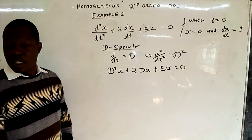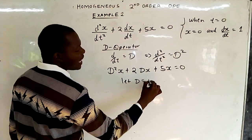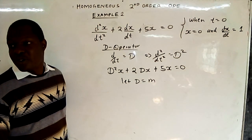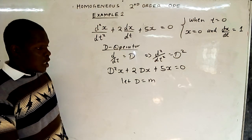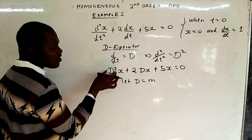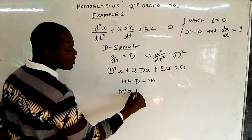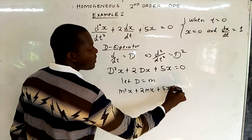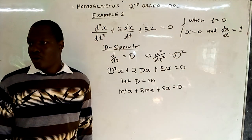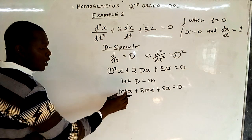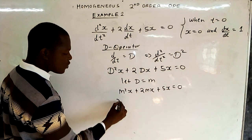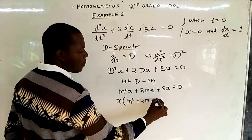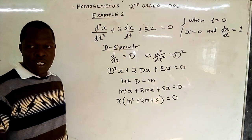We get to the auxiliary equation. When we let D equal to m — because D is in terms of derivatives, and m is not — we can now solve the quadratic. So when you let D equal to m, we get m squared x plus 2mx plus 5x equals 0. Since x is a common factor, factorize it out: x times (m squared plus 2m plus 5) equals 0.